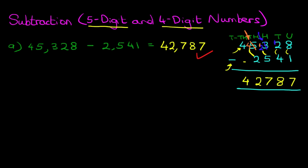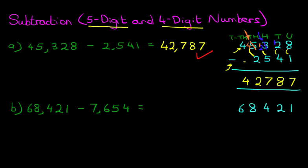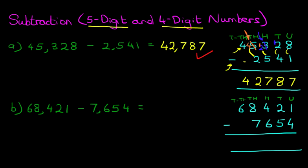Let's move on to our second example. This time we've got 68,421 minus 7,654. The first step is to rewrite the question in nice neat columns. We've got 68,421 minus 7,654. Let's label the columns: units, tens, hundreds, thousands, and TTH for ten thousands.